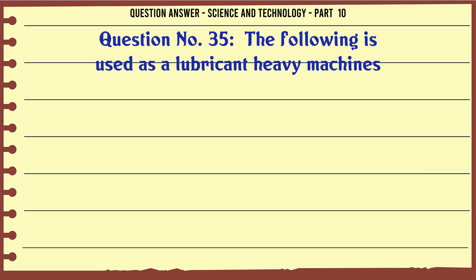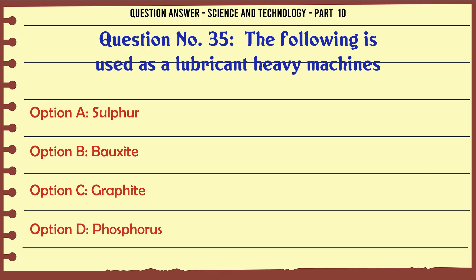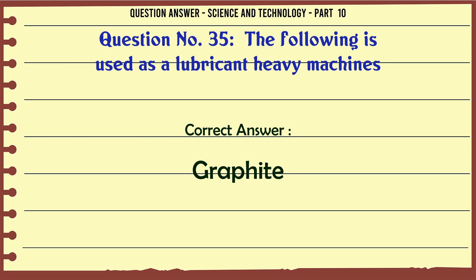The following is used as a lubricant in heavy machines. A. Sulphur. B. Bauxite. C. Graphite. D. Phosphorus. The correct answer is Graphite.